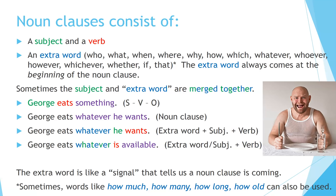Let's look at the next example: George eats whatever is available. In this case, we're merging the extra word and the subject. 'Whatever' serves two purposes — it is the extra word and it is the subject of the noun clause. 'Is' is the verb. 'Available' just completes the noun clause — in this case it's an adjective, but you can use other words in that position as well. The extra word is like a signal that tells us a noun clause is coming. Sometimes words like 'how much,' 'how many,' 'how long,' 'how old' can also be used.